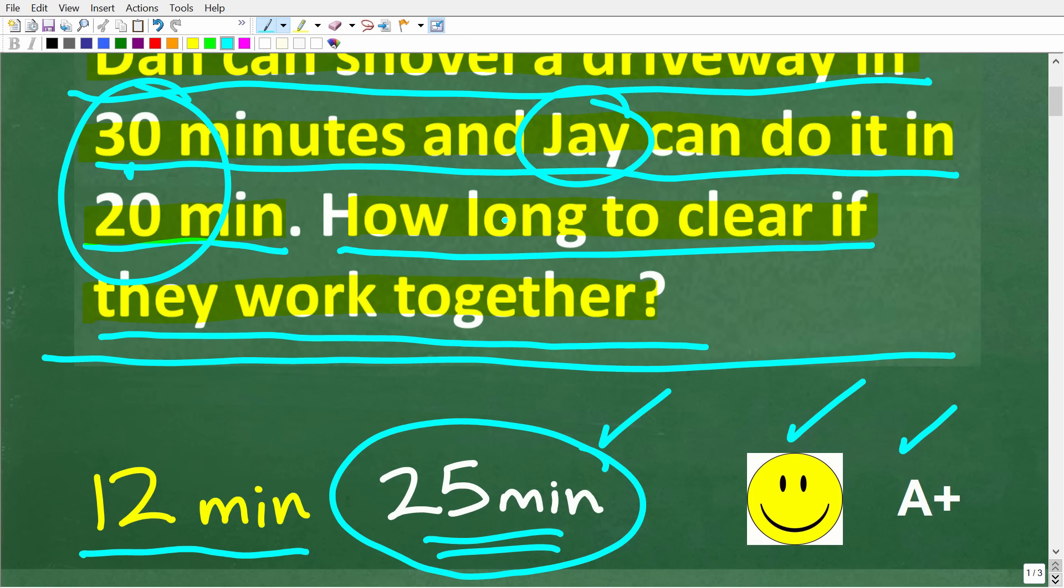But this answer makes no sense. So if Jay, by himself, can do the job in 20 minutes, if he has Dan's help, is the time to do the job going to be longer than Jay can do it by himself? No, it's not.